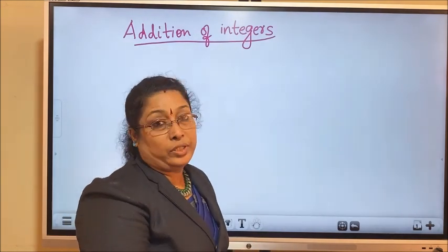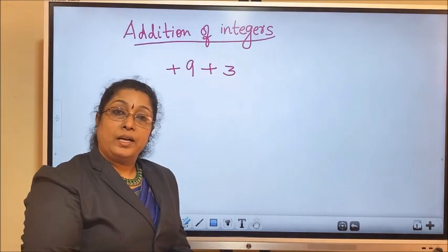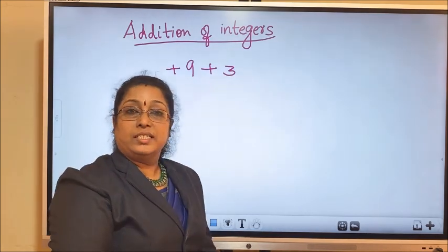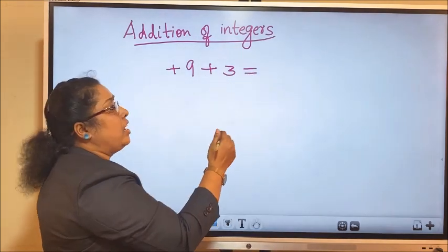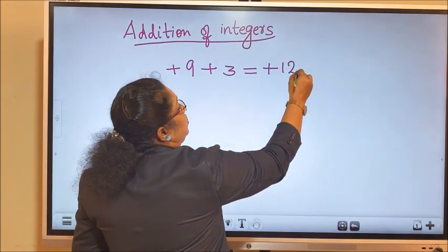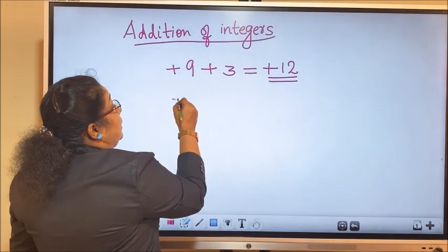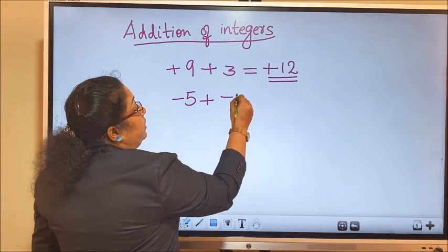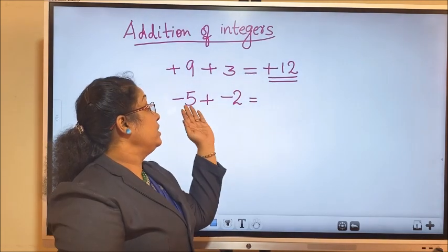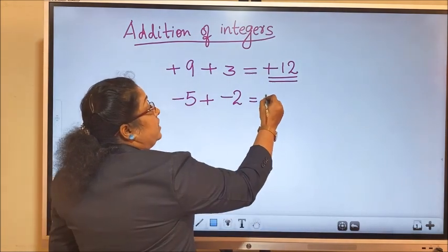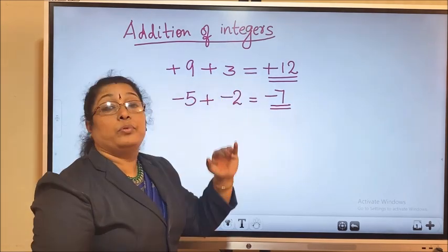Let's do some examples of addition of integers. First, we add two integers of the same sign. Positive 9 plus positive 3 — both are of the same sign, so just add 9 and 3 and put the positive sign. The answer is positive 12. Again, take two integers with a negative sign: negative 5 plus negative 2. Add 5 and 2, which is 7, and the sign of both integers is negative. So the answer is negative 7.